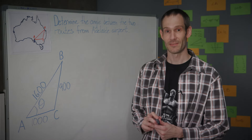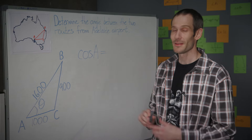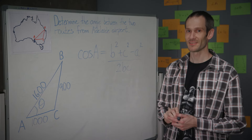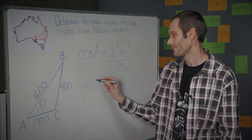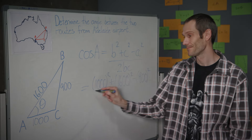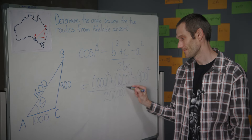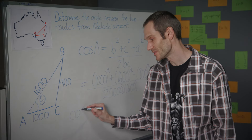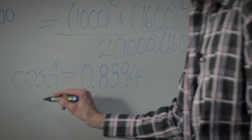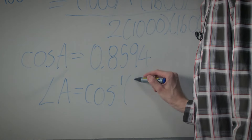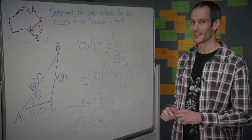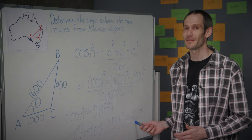The cosine rule tells us to work out the cosine of the angle at A. That's simply equal to the sum of B squared plus C squared, take away A squared, over twice the product of B and C. Substituting the given information and evaluating gives us the cosine of the angle at A. To find the angle at A, simply take the cosine inverse of 0.8594, giving us a value of 30.75 degrees. Therefore, the angle between the two routes from Adelaide Airport is approximately 31 degrees.